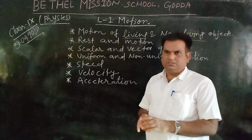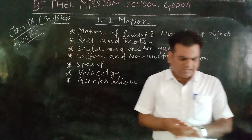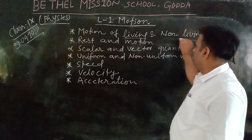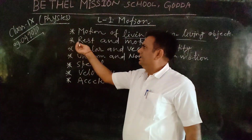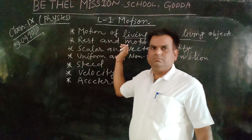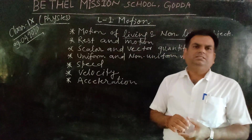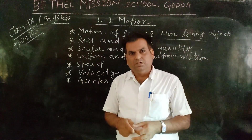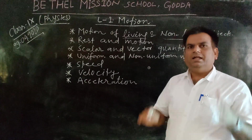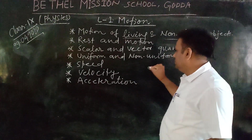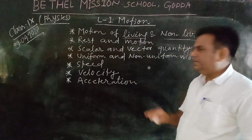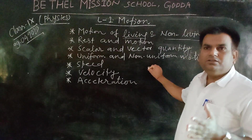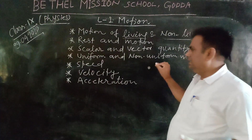These are the non-living objects and they also exhibit motion. Now, rest and motion — these two terms. What is rest? Rest means when the object doesn't change its position with respect to time. Suppose an object is here, and after one hour the object remains in the same position — it doesn't change its position with respect to time. Then we can say the object is at rest.